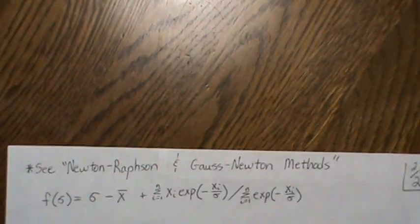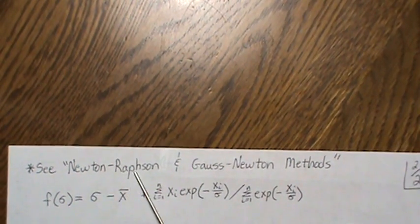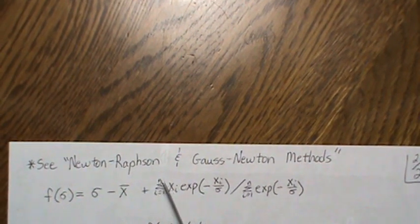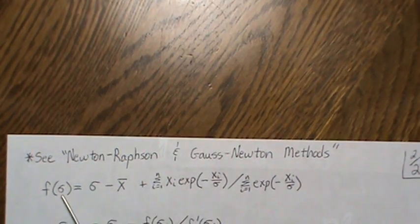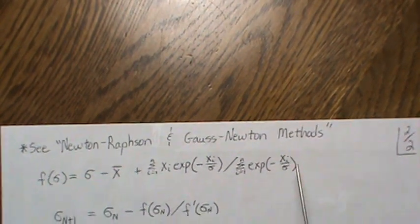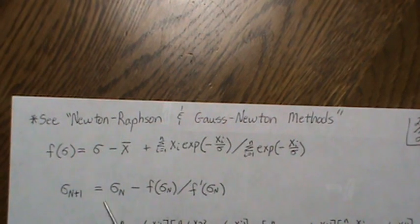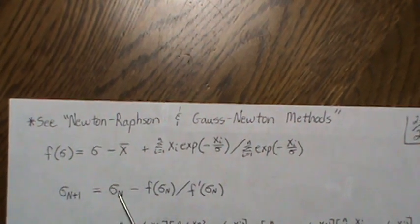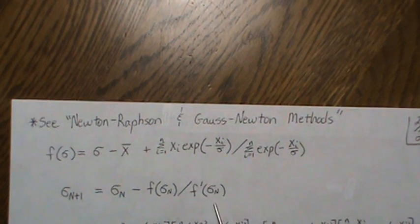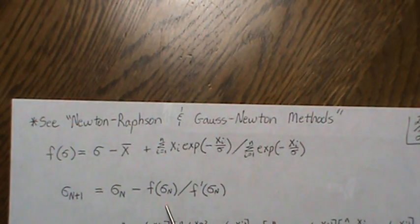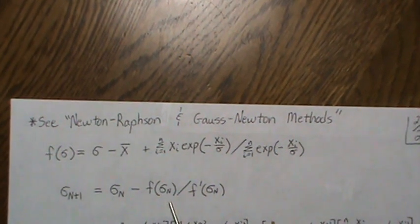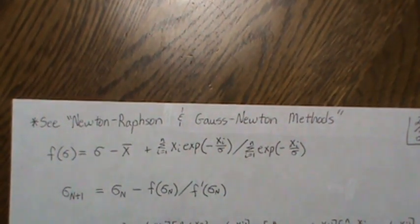To solve for σ̂ we use the Newton-Raphson method — I have a dedicated video on Newton-Raphson and Gauss-Newton methods. We define f(σ) as the equation we just derived set equal to zero. The algorithm starts with an initial guess σ_0, then iterates using σ_{new} = σ_{old} − f(σ_{old}) / f'(σ_{old}). So we need to find f'(σ).